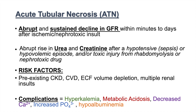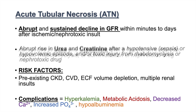Acute tubular necrosis has specific complications. It can lead to hyperkalemia, metabolic acidosis, decreased calcium, increased phosphate, and hypoalbuminemia.